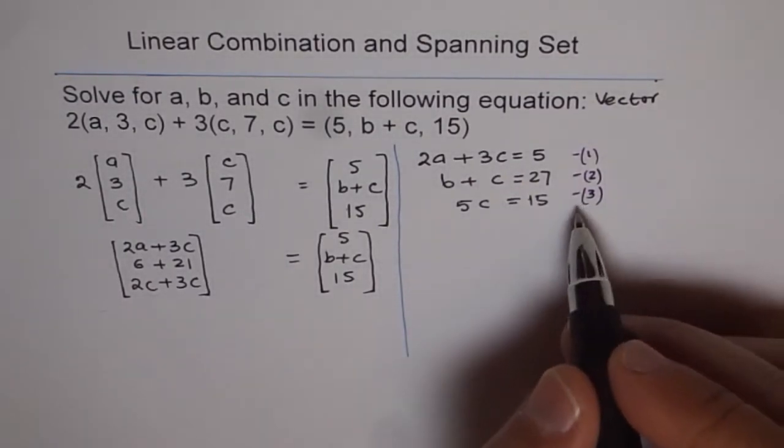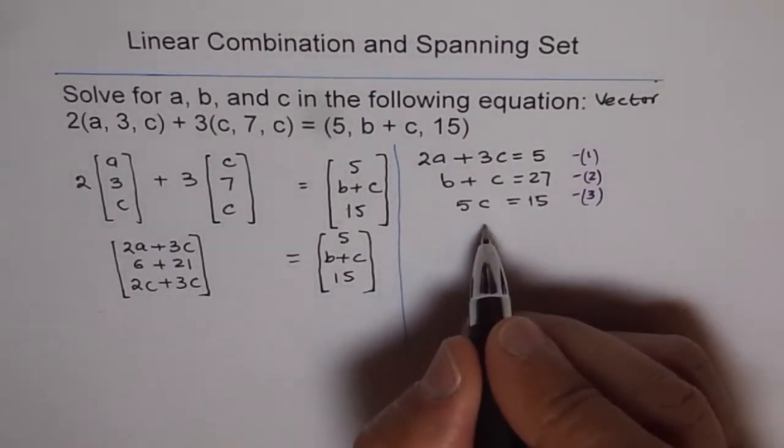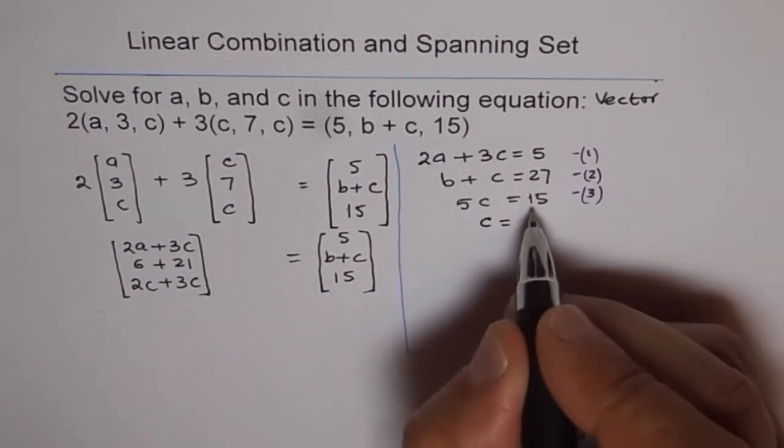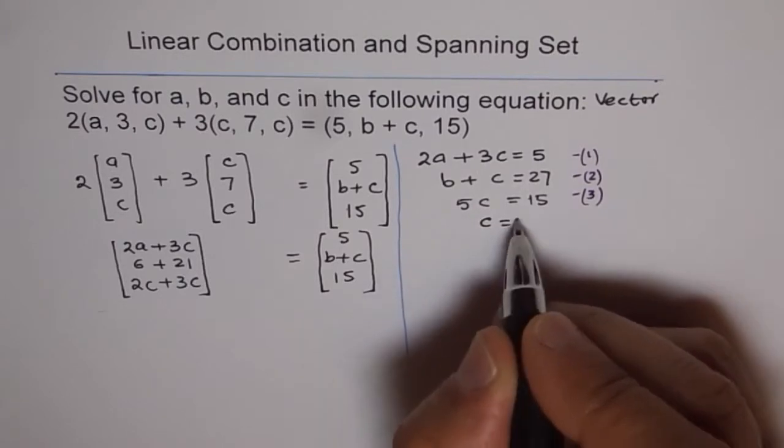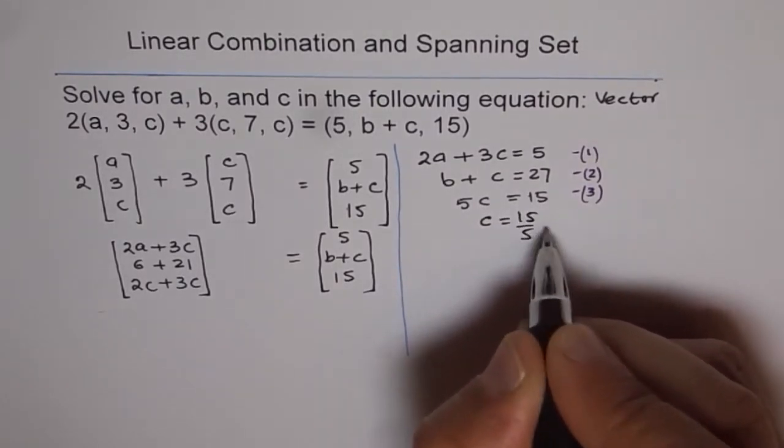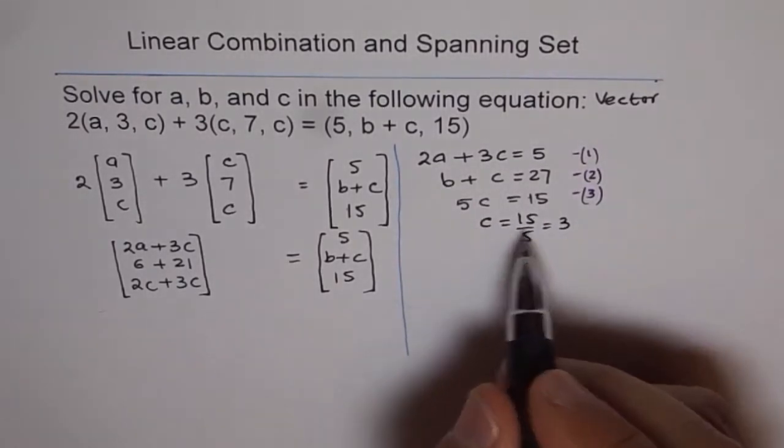We can use equation number 3 and find what c is. From 3, we get c equals to 15 divided by 5, which is equals to 3. Now, we know what c is.